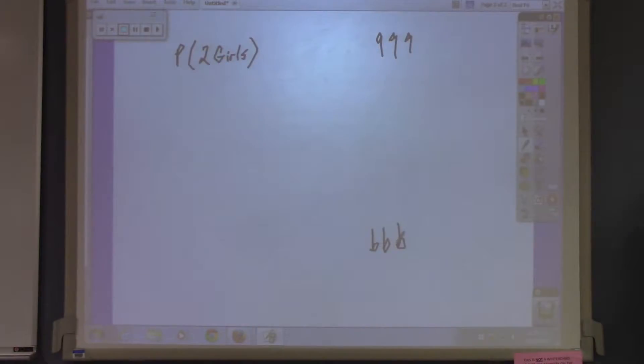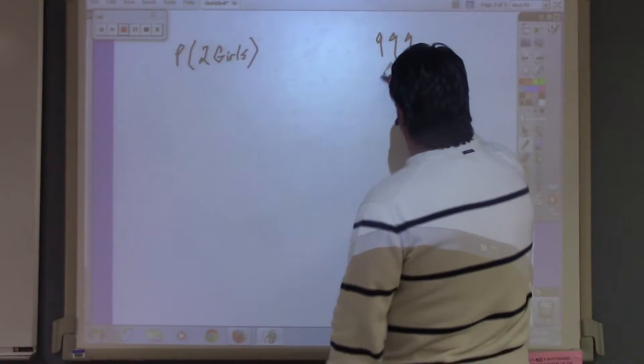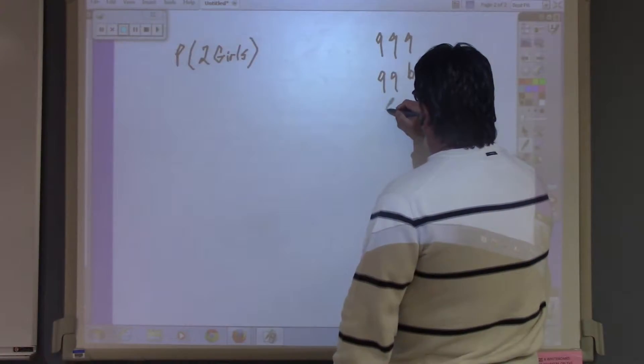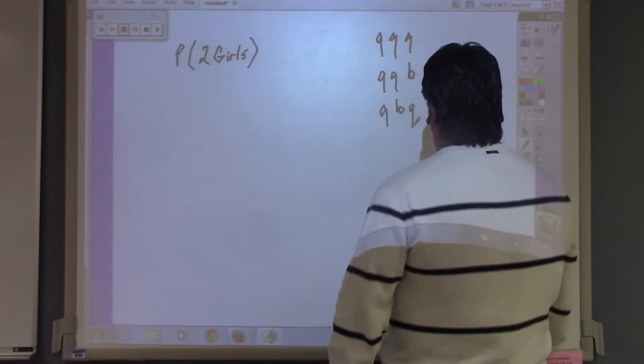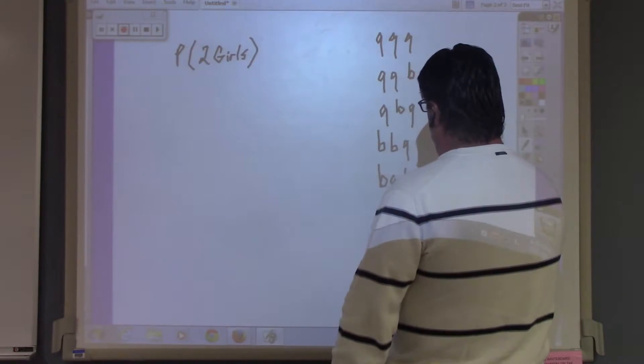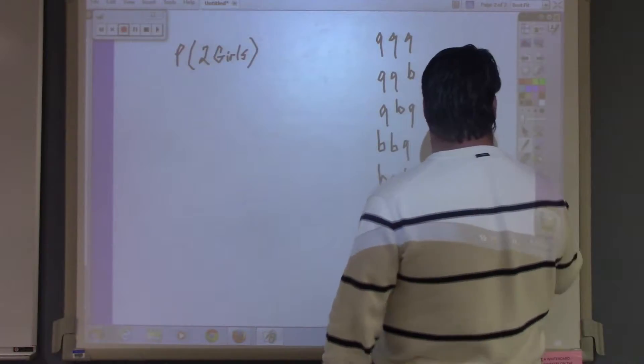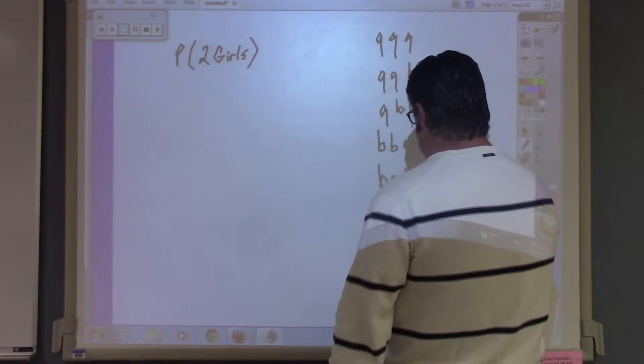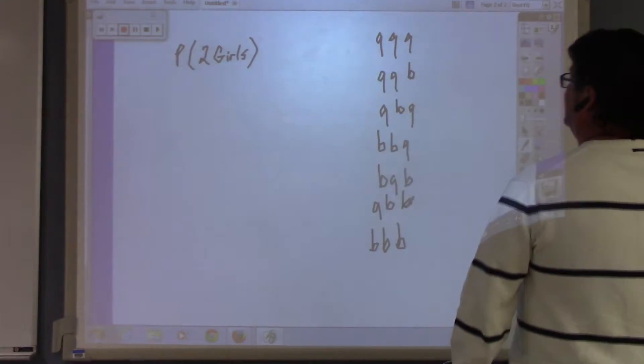Now, these type problems are not like the card problems. Card problems and the die problems and the coin problems, those are problems that are real simple because you know the sides. You don't have to construct a sample space, but with this one, you have to construct a sample space. So let's go with girl, girl, boy, girl, boy, boy, girl, boy, boy, boy, and girl, boy, boy.